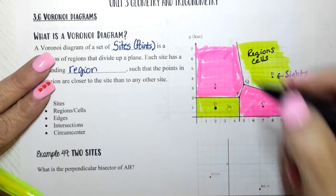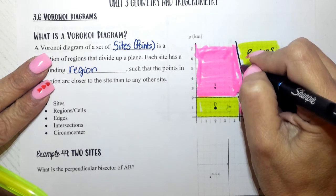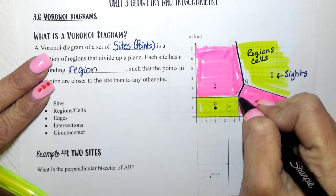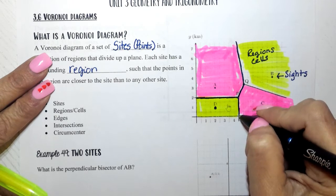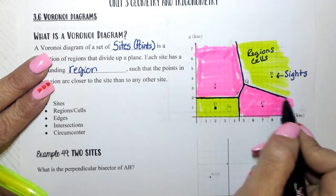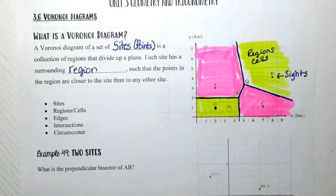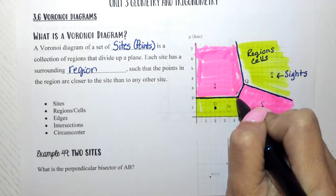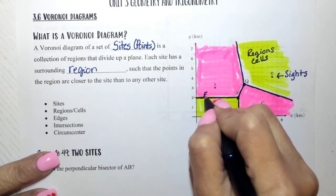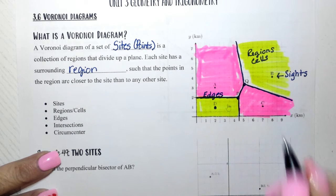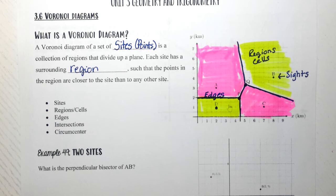Now the edges — these lines right here — are called the edges. Edges are the perpendicular bisectors that divide the regions up, and those are what we're constantly trying to find. Where they meet — P and Q right here — those form vertices, which are going to be called our vertices. These lines are going to be called our edges. That's pretty much what a Voronoi diagram is.